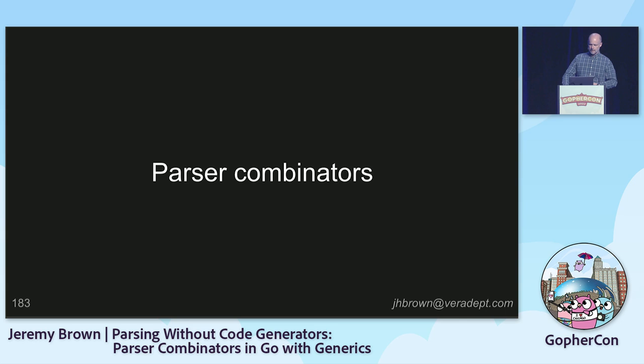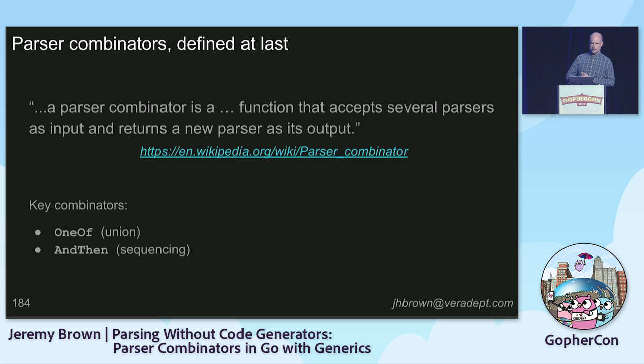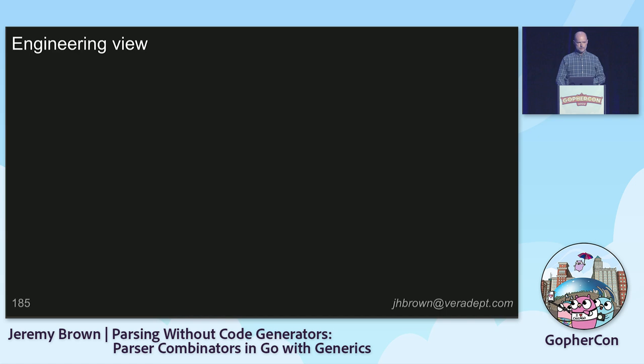As we approach the final minutes of the talk, I should tell you what parser combinators actually are. A parser combinator is a function that accepts several parsers as input and returns a new parser as its output. So we've seen, in particular, `oneOf` and `andThen`. Almost everything else was a parser-generating function or some ancillary thing, which has relatively little to do with parser combinator theory — which is probably why we didn't talk much about theory.